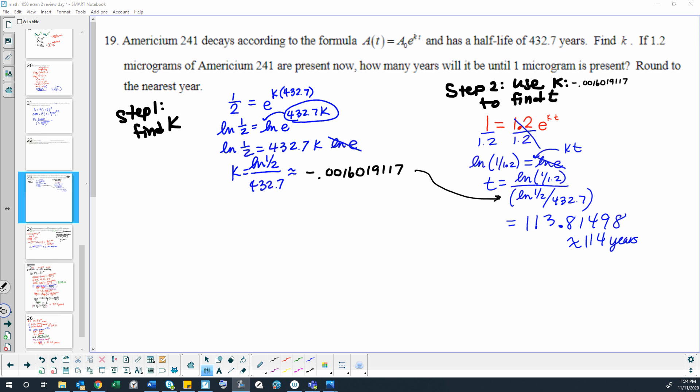We need to start by finding k, so we can stop right there at that point without seeing the rest of the problem to just find k. Then reading the rest of the question would be for our step two and final answer. If 1.2 micrograms of Americium 241 are present now, how many years will it be until one microgram is present? Find the answer rounded to the nearest year.